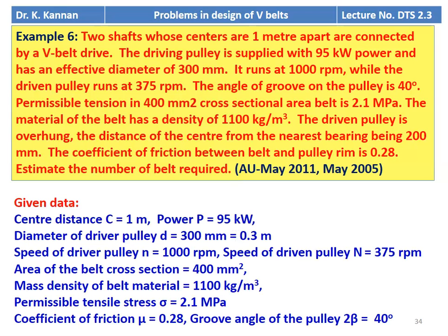Given data: center distance C = 1 m, power = 95 kW. Diameter of driver pulley d = 300 mm = 0.3 m. Speed of driver pulley n = 1000 RPM. Speed of driven pulley N = 375 RPM. Area of belt cross-section = 400 mm². Mass density = 1100 kg/m³. Permissible tensile stress σ = 2.1 MPa. Coefficient of friction μ = 0.28. Groove angle 2β = 40°.